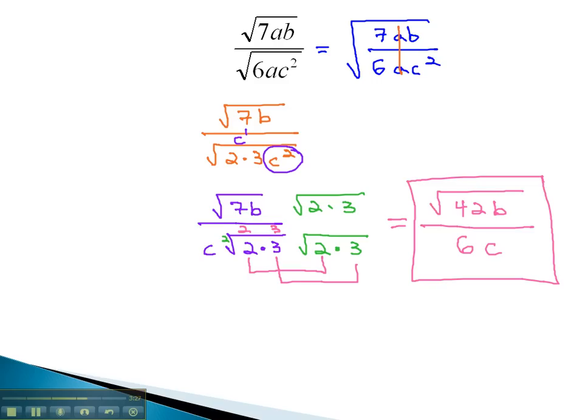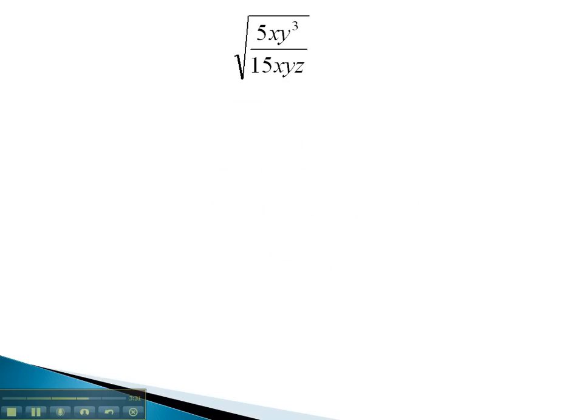Let's try another example, where we rationalize the denominator and simplify the fraction. In this problem, you can see that 5 and 15 reduce, leaving a 3.